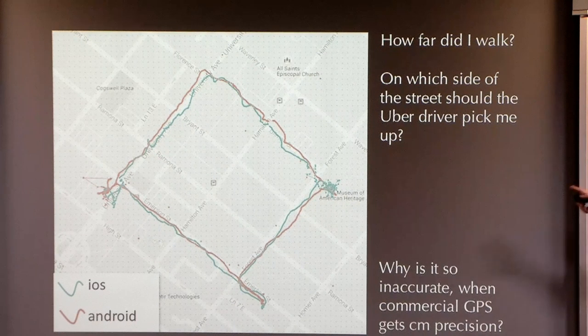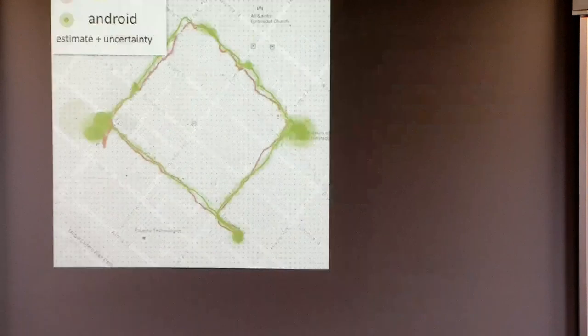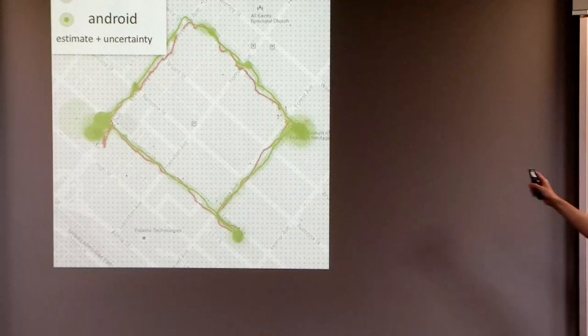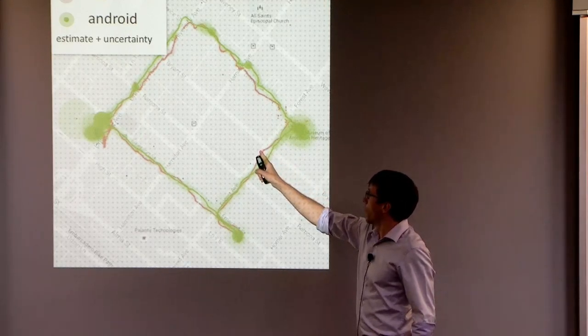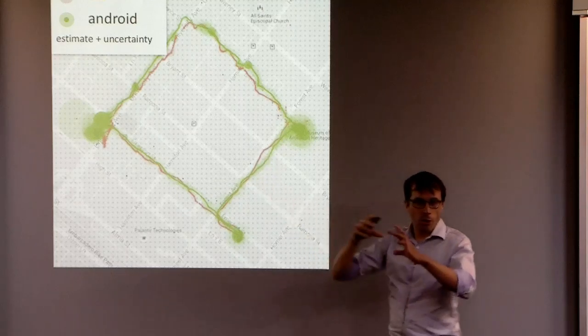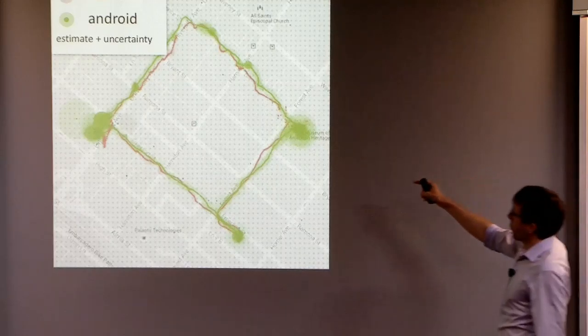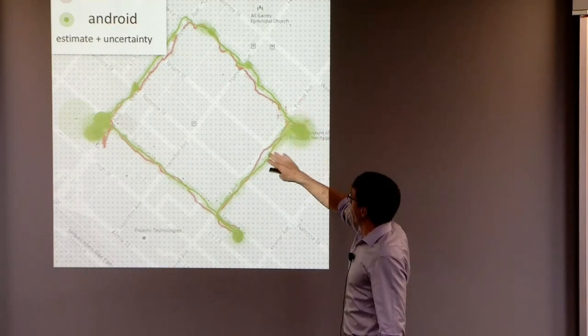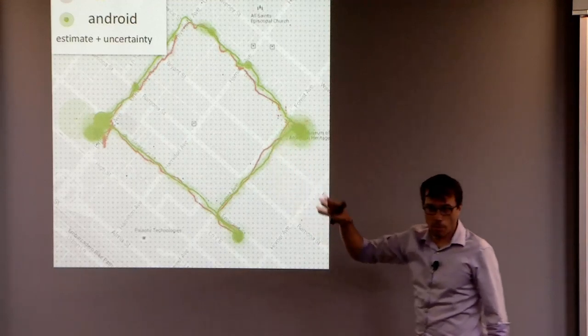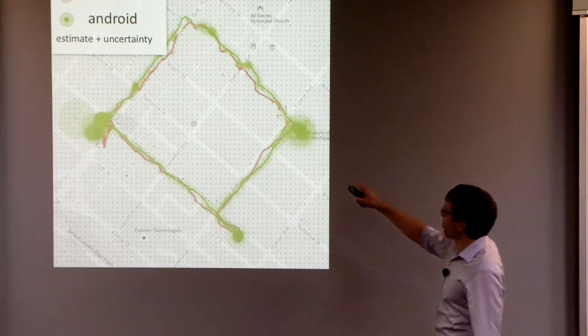But I wanted to dig in a bit further. Let's learn a bit more about this data. When your phone reports its position, it reports a position estimate. And it also reports an uncertainty estimate. The uncertainty is measured in metres. Here I've drawn the uncertainty measurements from the Android in green and the iOS in red. Sorry, I'm afraid the colours keep on changing from side to side.